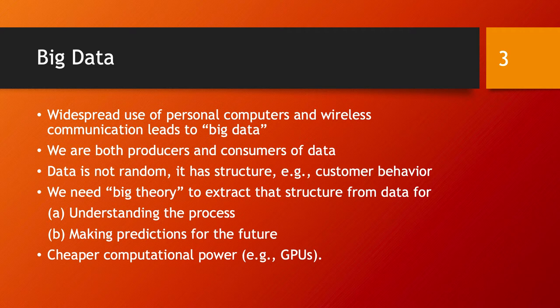And the thing is that data is not really random. It has structure. Events happen because of some context that surrounded them. And so, for example, customer behavior is something that you can understand from their data. In this world of really big data, we need a sort of big theory to extract that structure from data. And the goal in doing that is to understand the process, understand why something happened, when it happened, and especially the interest is in making predictions for the future.